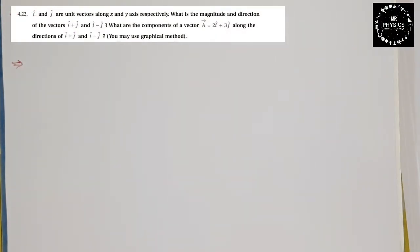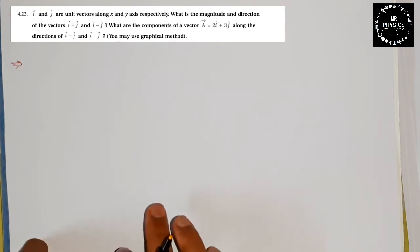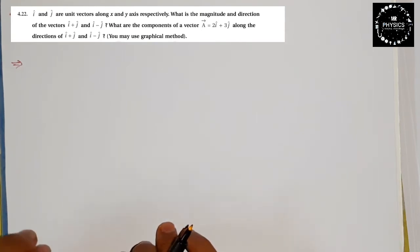Hello students, Example 4.22 — one of the important examples for the examination. If i-cap and j-cap are unit vectors along the x and y-axis respectively, then what is the magnitude and the directions of (i+j) and (i-j)? And what are the components of vector a = 2i-cap + 3j-cap along the directions of (i+j) and (i-j)?